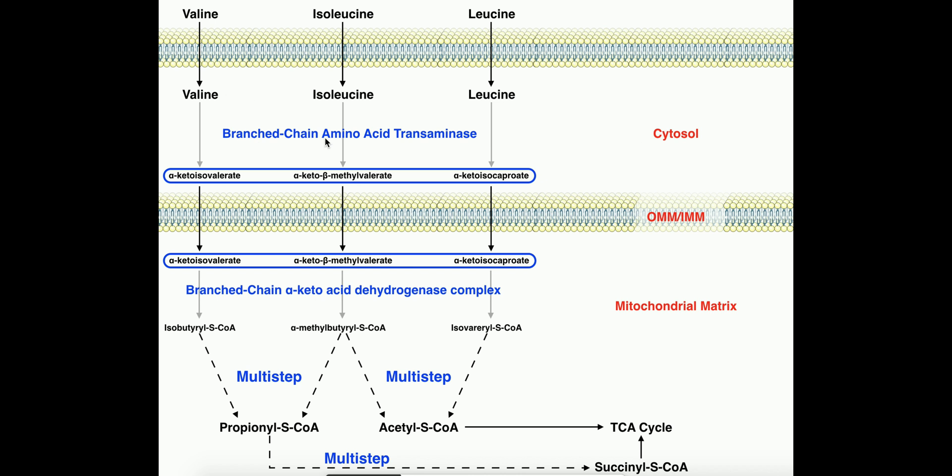Now the first enzyme in this pathway is called branched chain amino acid transaminase. And sometimes you'll hear this referred to as branched chain aminotransferase. Basically what this enzyme does is it's just going to take the amino group and convert it into a carbonyl. And you're going to get these corresponding what are called alpha-keto acids.